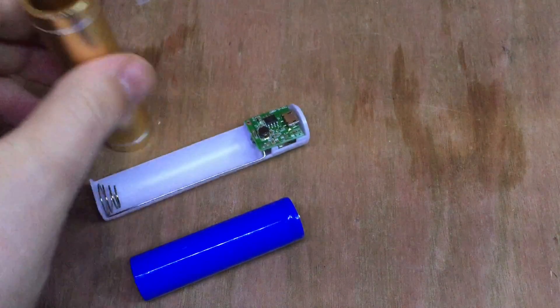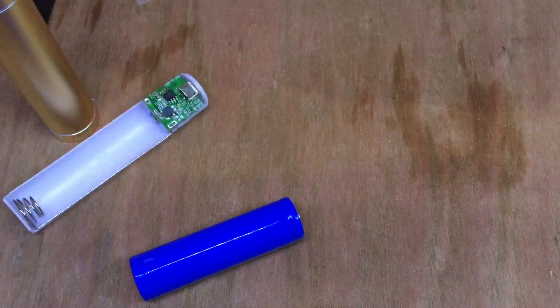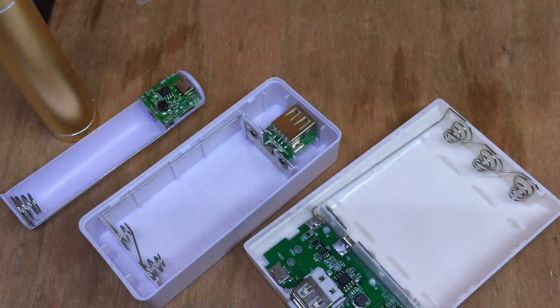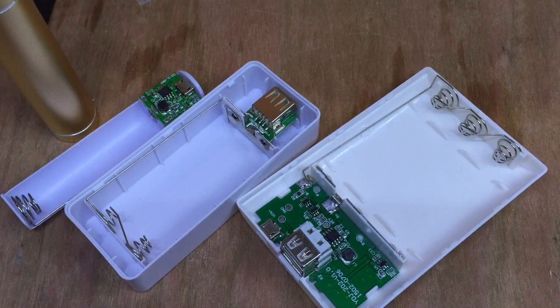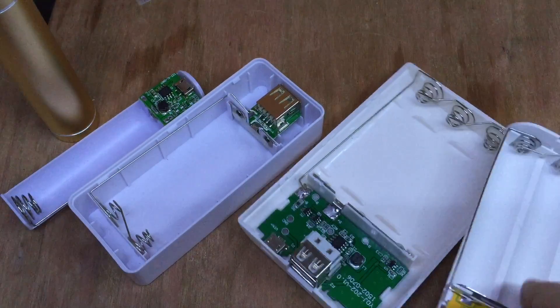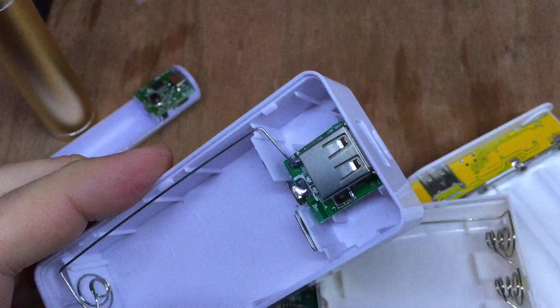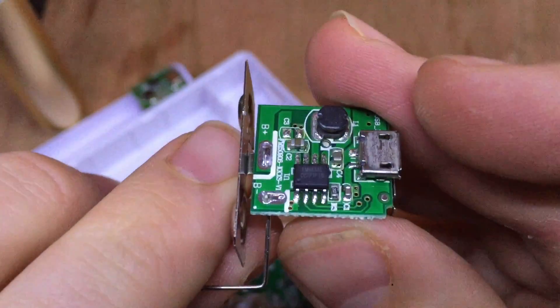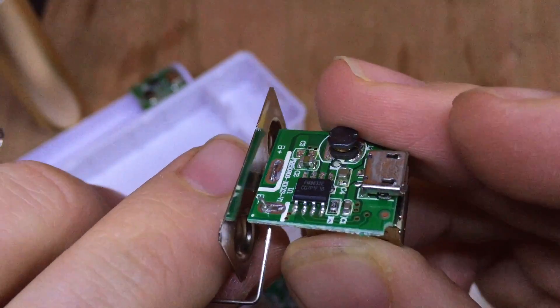And of course, you can get these in different sizes. So here's a two-cell version, three-cell versions, and four-cell versions. And these are just the same. These 8-pin ICs, there is a model number on there. I'll get it for you shortly.